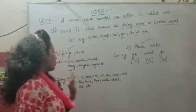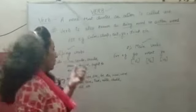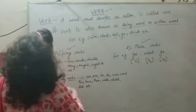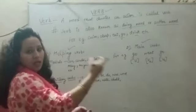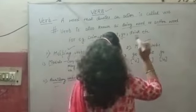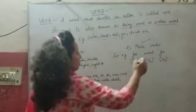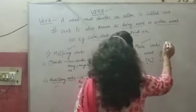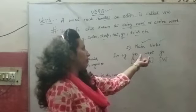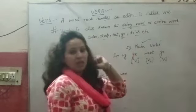So modals and auxiliary verbs are both helping verbs, and they come after the subject. The other type is main verbs. Main verbs are your action verbs — we also call them doing verbs. These are your main verbs which represent our actions.